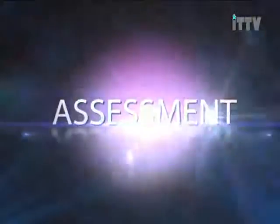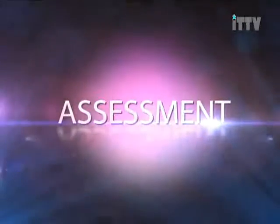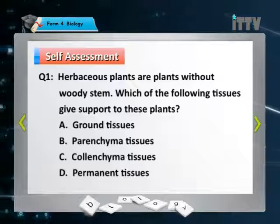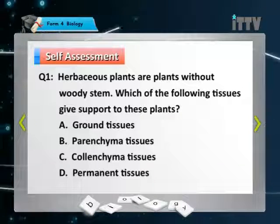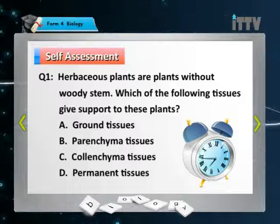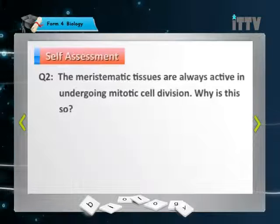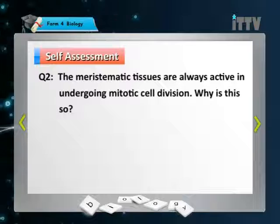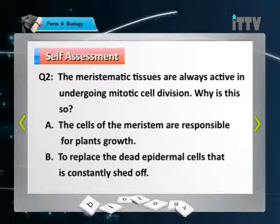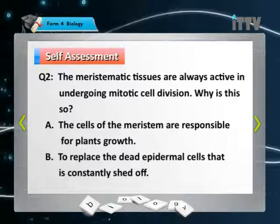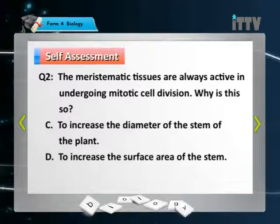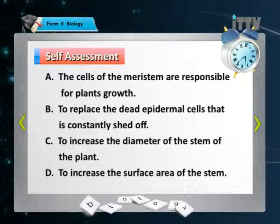Let's go to our first question. Herbaceous plants are plants without a woody stem. Which of the following tissues gives support to these plants? A. Ground tissue. B. Parenchyma tissue. C. Colenchyma tissue. D. Permanent tissue. The meristematic tissues are always active in undergoing mitotic cell division. Why? A. The cells are responsible for plant growth. The answer is A — meristematic cells are for growth.